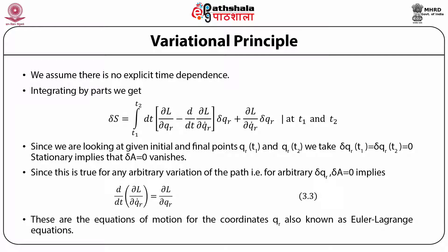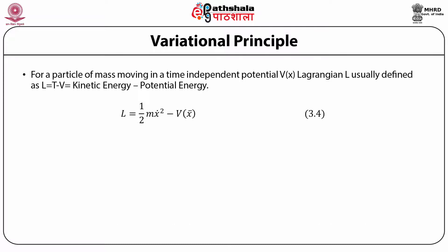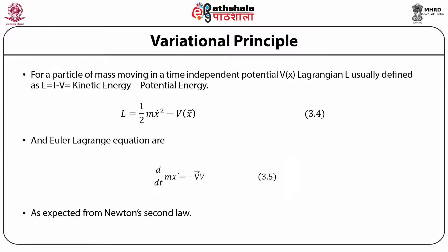The Lagrangian is constructed in such a way that the Euler-Lagrange equation corresponds to Newton's equations of motion. For a particle of mass m moving in a potential V(x), the Lagrangian L is defined as kinetic energy minus potential energy: L equals half m x-dot squared minus V(x). The Euler-Lagrange equations give d/dt of mx-dot equals minus gradient of V, which is Newton's second law: the rate of change of momentum equals the gradient of the potential.